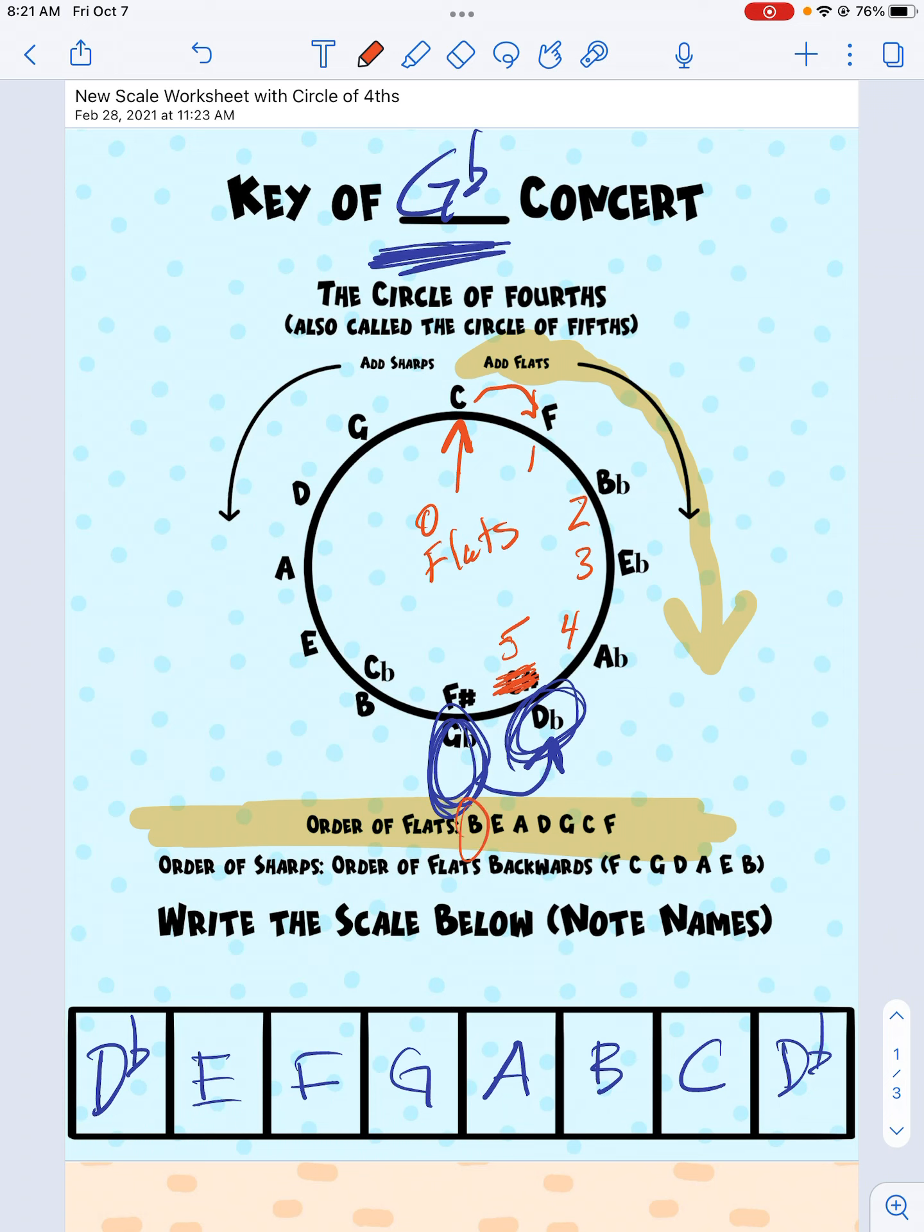And they're always in the same order. So if I had three flats, it would go B, E, A. If I had five flats, which I do, it's going to go B, E, A, D, G. Those are my five flats.